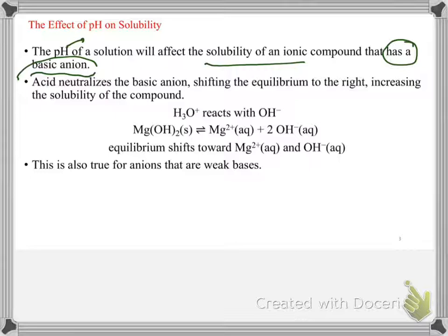Why? Because low pH means solution is acidic and this basic anion is going to neutralize the base. So, for example, let's look at this example. Magnesium hydroxide. This is a solid and it's in the saturated solution of magnesium hydroxide. Equilibrium expression is this.